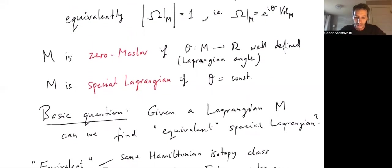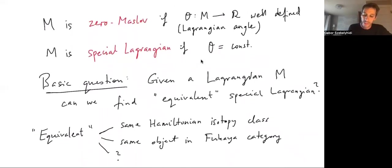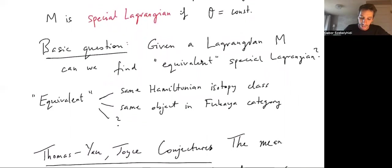In a minute we'll see that this has an equivalent definition in terms of the mean curvature. The basic question that motivates all of this work is the following. If we're given some Lagrangian M, say inside C^n or in a Calabi-Yau manifold, is it possible to find some other, in some sense equivalent, Lagrangian which happens to be special Lagrangian?